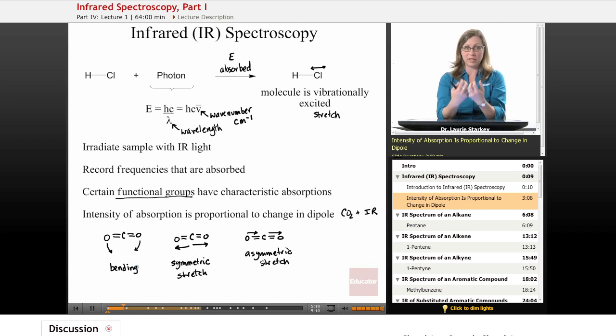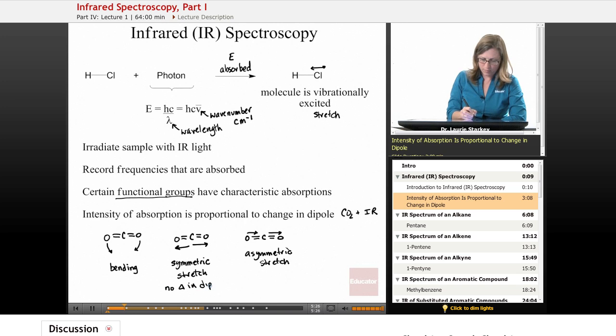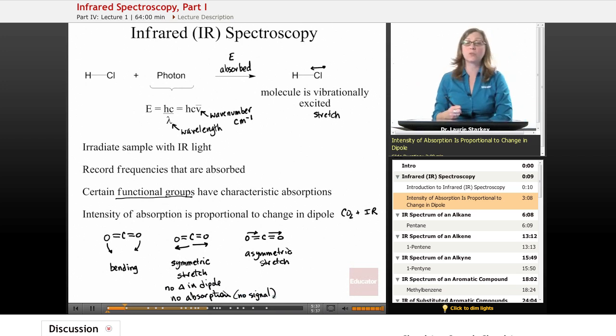That would have a signal in the IR. But if I were to pull these two oxygens in opposite directions with the same force, that would keep the molecule non-polar. There would be no change in dipole, and therefore there would be no absorption, meaning there's no signal in the IR for that motion. But if we were to stretch the molecule like this, where both oxygens move in the same direction, then it's going to have a change in dipole, and we get a signal.